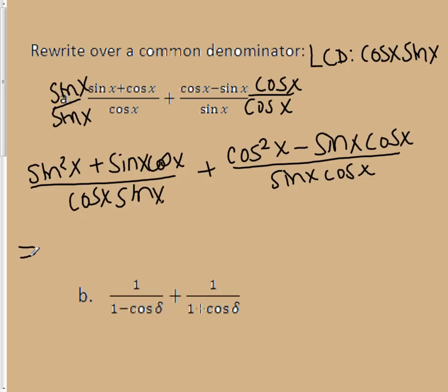And then this will equal, putting all over the same common denominator, the sine squared of x, I'm just going to rewrite, plus the cosine squared of x. And then what will happen when I put this over each other, this one and this one will cancel each other because one's a plus and one's a minus. All over the sine of x, cosine of x.